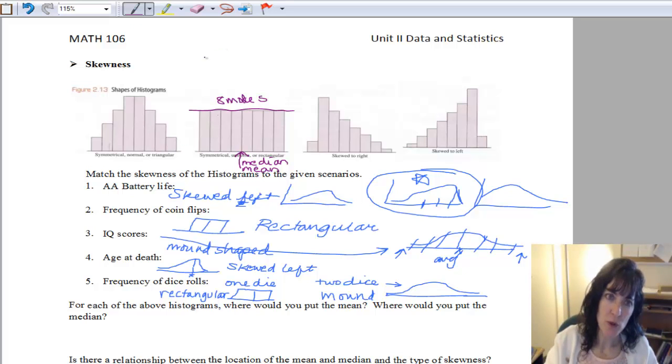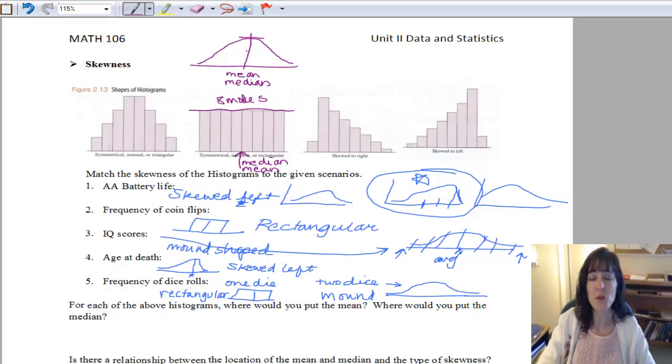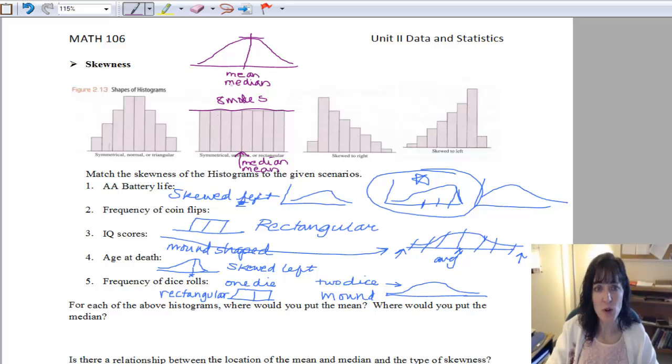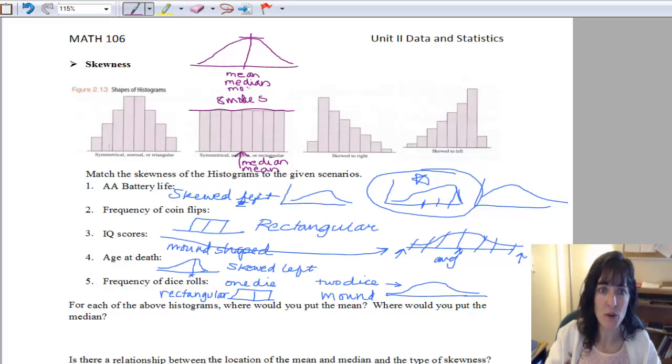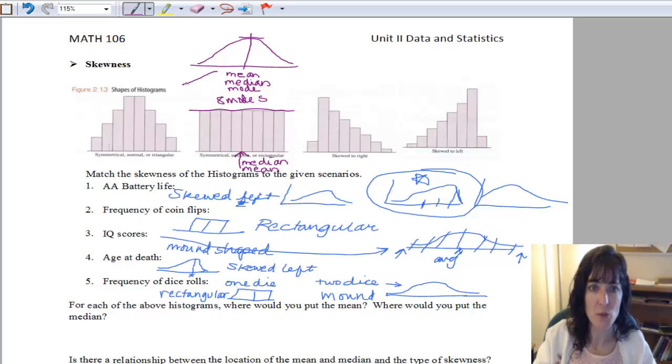So maybe I'll just put a little picture right here. If we have this sort of mound shaped, then our mean and our median are in the center, and one more thing too, the highest point, that's where our mode is, and so there's our mode right in the exact center as well, and those are for that first chart.